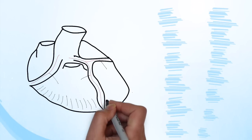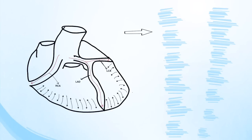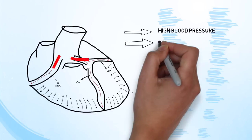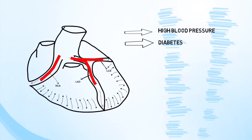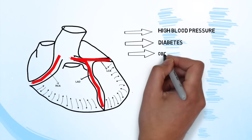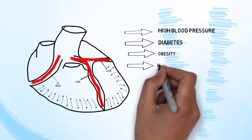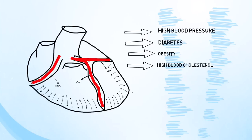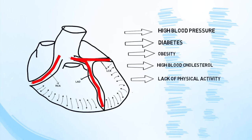The heart gets its blood supply via three coronary arteries. The various reasons for developing coronary artery disease are high blood pressure, diabetes, obesity, high blood cholesterol, lack of physical activity, smoking, and unhealthy diet.